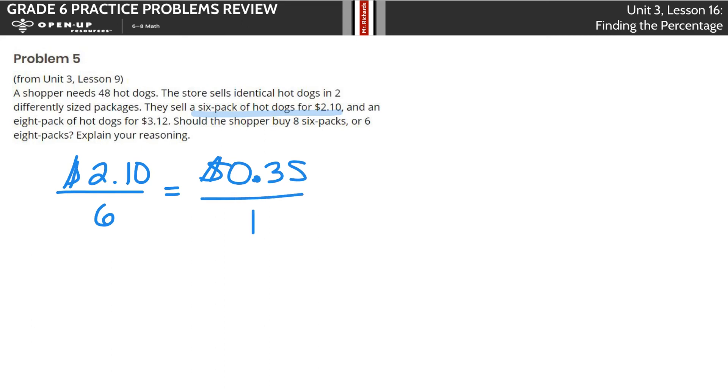Let's compare that to the eight pack of hot dogs for $3.12. If we set up $3.12 divided by eight, here we get $0.39 for one pack. Once we have it down to that unit price, we're going to go, wow, the six pack is cheaper. So they should get eight six packs since the unit price is cheaper.